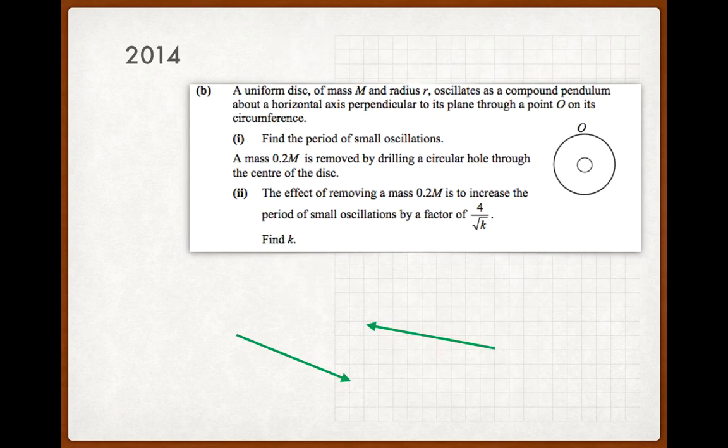All right, let's have a look at 2014. We have a uniform disk of mass m and radius r that oscillates as a compound pendulum about a horizontal axis perpendicular to the plane through a point O on its circumference. So the axis is going into the board and it's at the point O on the outside. Find the period of small oscillations. That should be straightforward because it's simply a disk, a uniform disk as well. Okay, so you'll calculate that, you'll bank it for later on.